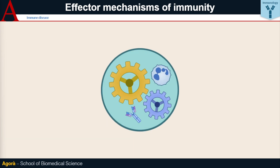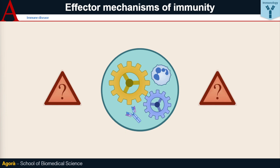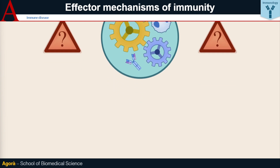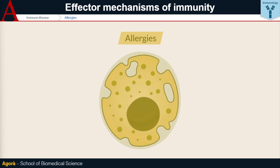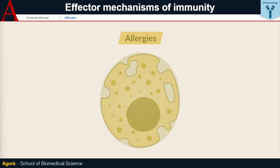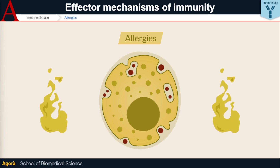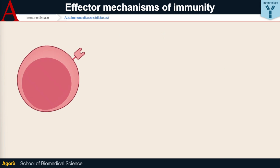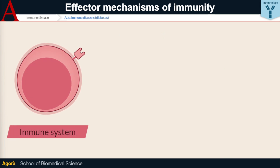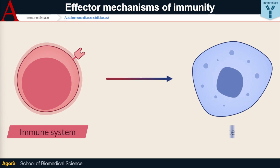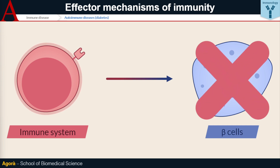In other diseases, the immune system does not play a defensive role but works in an altered way. In allergies, for example, a normally harmless antigen is seen as alien and leads to the massive and immediate release of inflammatory substances that can even kill the individual. In autoimmune diseases, on the other hand, the immune system identifies and destroys tissues in the body. An example is type 1 diabetes, where the beta cells of the pancreas are destroyed by the immune system, resulting in the absence of insulin in the individual.